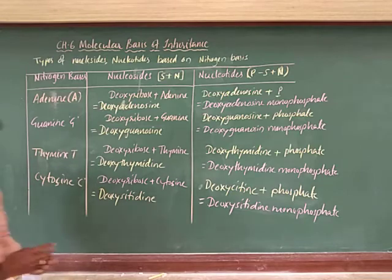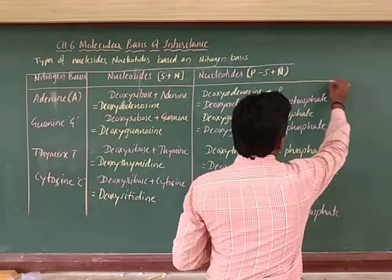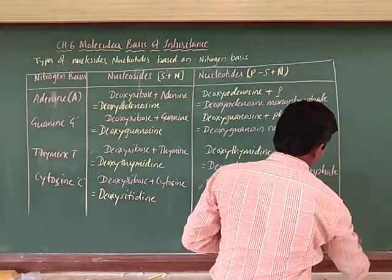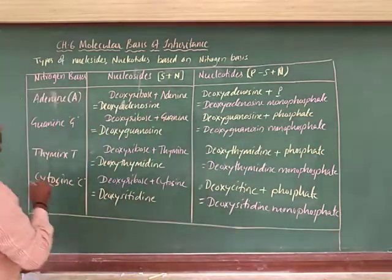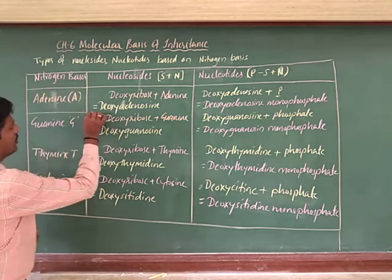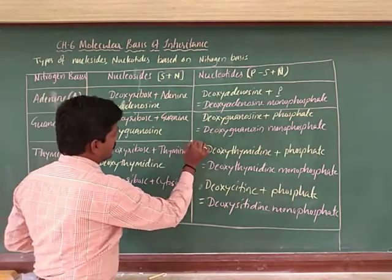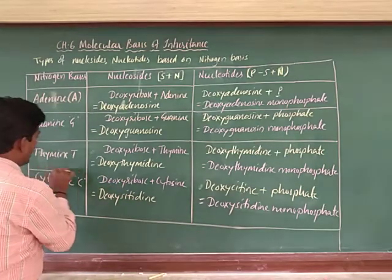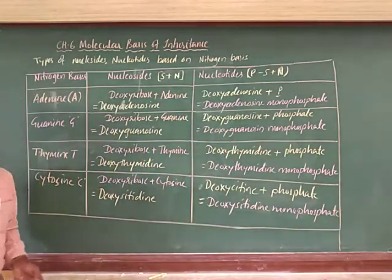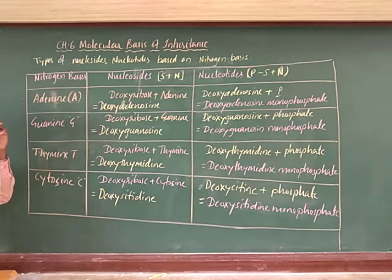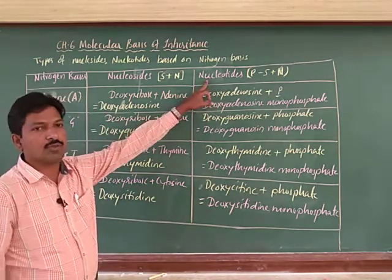This chart represents the four types of nucleotides. You should note this — it is very important. If you remember all four types of nucleotides, then you can understand DNA very easily.